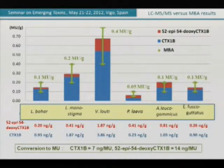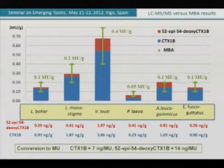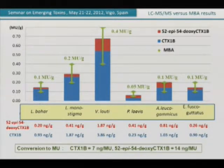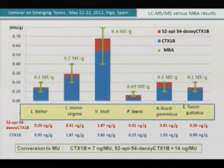In Japan, the official method to determine toxin is the mouse bioassay. So we have to see the correlation between the mouse bioassay and the LC-MS analytical result. For conversion, we have a conversion factor from micrograms to mouse units, obtained mostly from cytotoxicity tests. Because the toxic amount is so small there are some fluctuations, but the correlation is quite good between LC-MS analysis and mouse assay results.